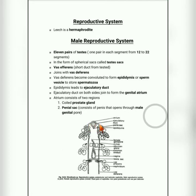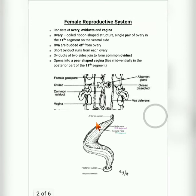The epididymis from both sides leads to an ejaculatory duct. The two ejaculatory ducts join together to form a genital atrium. Inside the genital atrium, a coiled prostate gland and a penial sac containing the penis are found. The penis opens through the male genital pore.